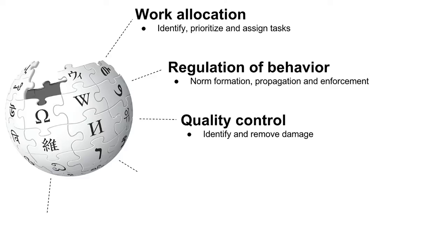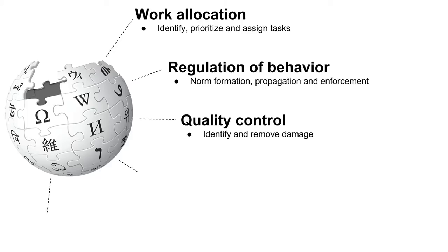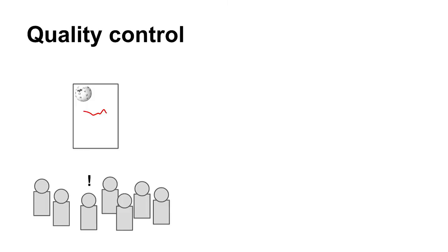The next subsystem is quality control. Wikipedia is an open wiki; anybody can edit it. We have to control the quality — we need to identify and remove damage. This benefits from the many eyes of Linus's Law: given enough people observing a Wikipedia article, somebody will detect damage and remove it. This has worked through Wikipedia's history, but it doesn't scale that well, especially because many people can read a vandalized version before it gets cleaned up.